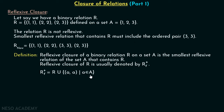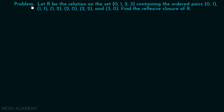Now let's discuss one problem related to reflexive closure. Let R be the relation on the set {0, 1, 2, 3}, containing the ordered pairs (0,1), (1,1), (1,2), (2,0), (2,2), and (3,0). Find the reflexive closure of R. We are interested in finding the reflexive closure of this particular relation, which is defined on the set {0, 1, 2, 3}.